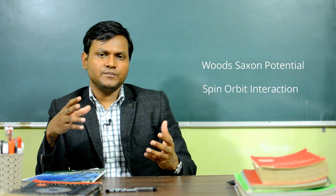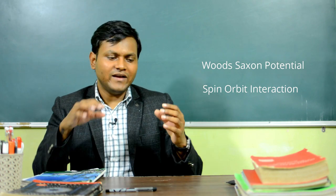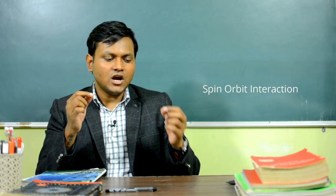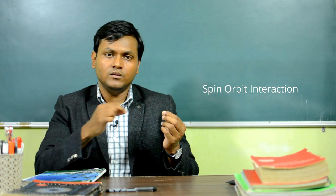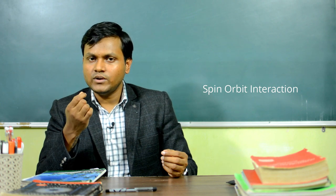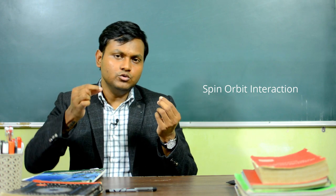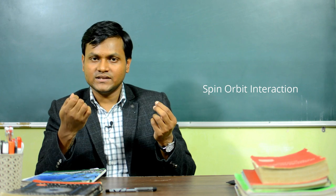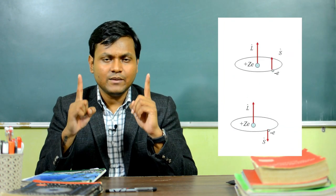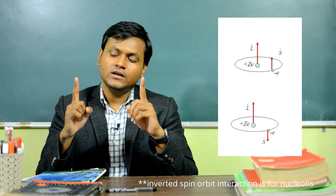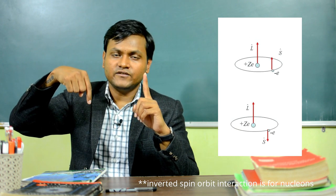What was missing? A final solution was obtained when two scientists, Mayer and Jensen, introduced the idea of spin-orbit interaction. In the atomic model, an electron revolving around the nucleus has an orbital angular momentum and a magnetic moment associated with its orbital motion. The electron is also spinning on its own axis and has a magnetic moment due to that spin. These two magnetic moments can interact with each other — when they are in the same direction the energy is higher, and when they are in opposite directions the energy is lower. This is known as spin-orbit coupling or spin-orbit interaction.